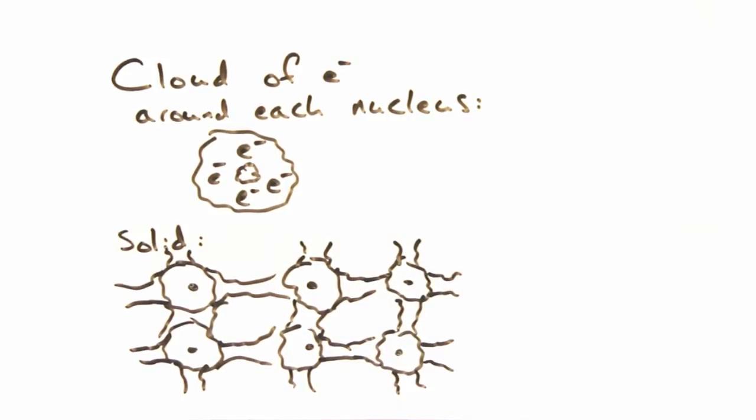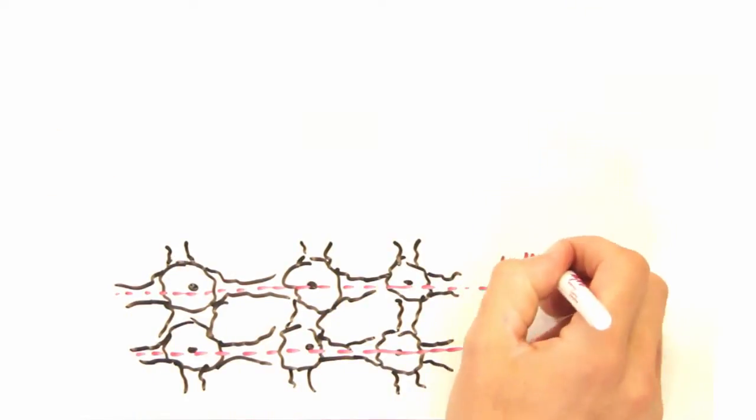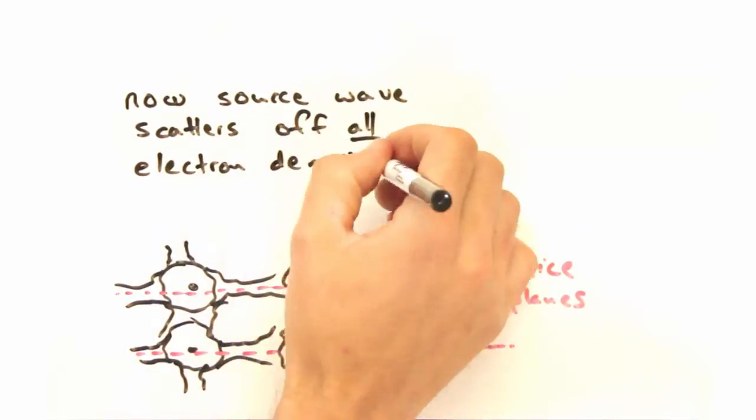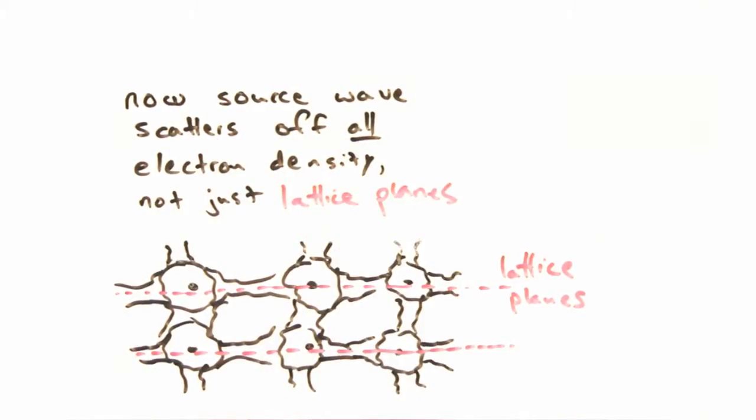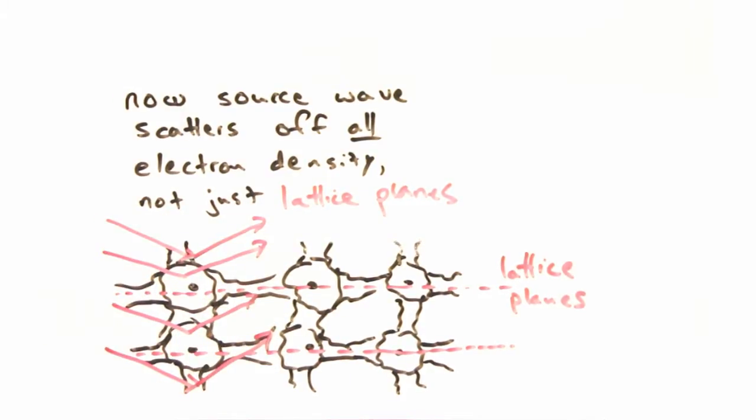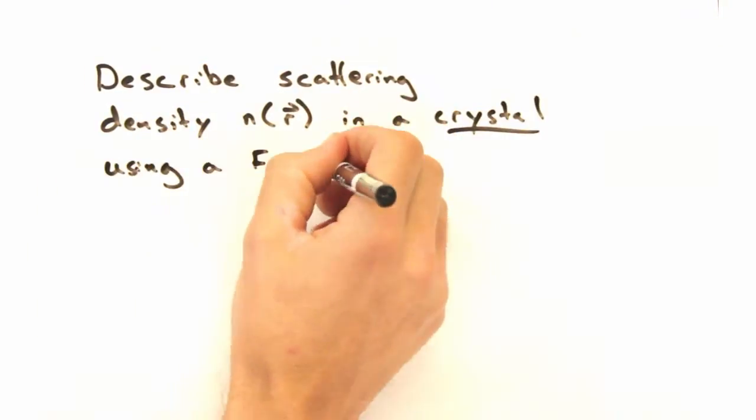The underlying physics of constructive interference still holds, but this notion of discrete planes of atoms now gets pretty fuzzy. So instead, every region with non-zero scattering density within the sample will contribute to the interference pattern of the detector. It's a little easier to see now why we need a periodic scattering density to model a real-world sample.